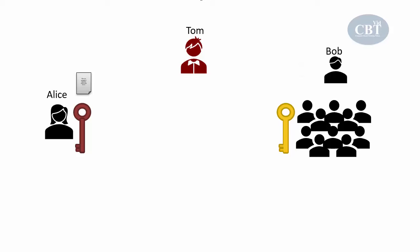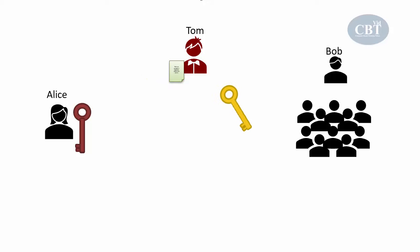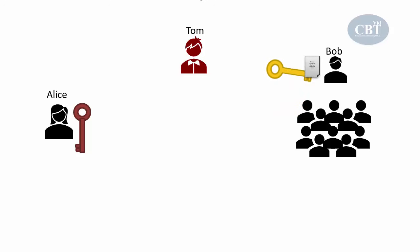Now, if Tom, who is a bad guy, decides to get his hands on the message, decrypt it using Alice's public key, see the content, and change the message — then when he encrypts the message using any key, including Alice's public key, and forwards it to Bob, Bob cannot open that message using Alice's public key, because that message was not encrypted by Alice's private key. So Bob knows that this message has been tampered with or didn't come from Alice, and he gets rid of the message.